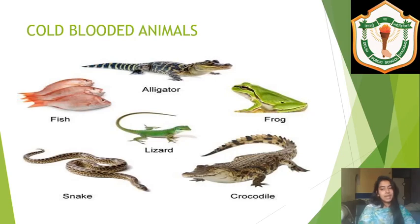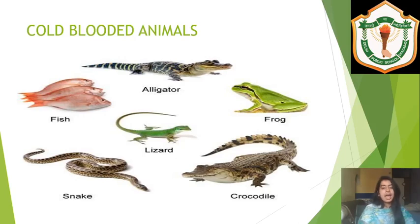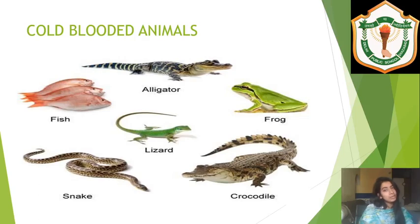You must have seen that frogs, alligators, and crocodiles — whenever we go to the zoo — they are basking in the sun, sitting and soaking in the sun rays. Why is that happening? And fish during summers swim at different levels in the water, and during winters they swim at different levels too. Why is that happening?